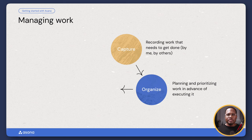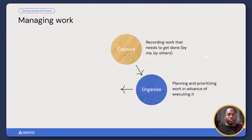The next thing it allows us to do is organize all of our work — all of the planning and the prioritizing of work in advance of actually executing it. When we come together, meet virtually or in person, we have ideas, we're sharing, brainstorming, putting together project plans, campaigns, events, whatever it may be. We need to organize that somehow so that everyone is always on the same page and aligned around who is doing what and by when.